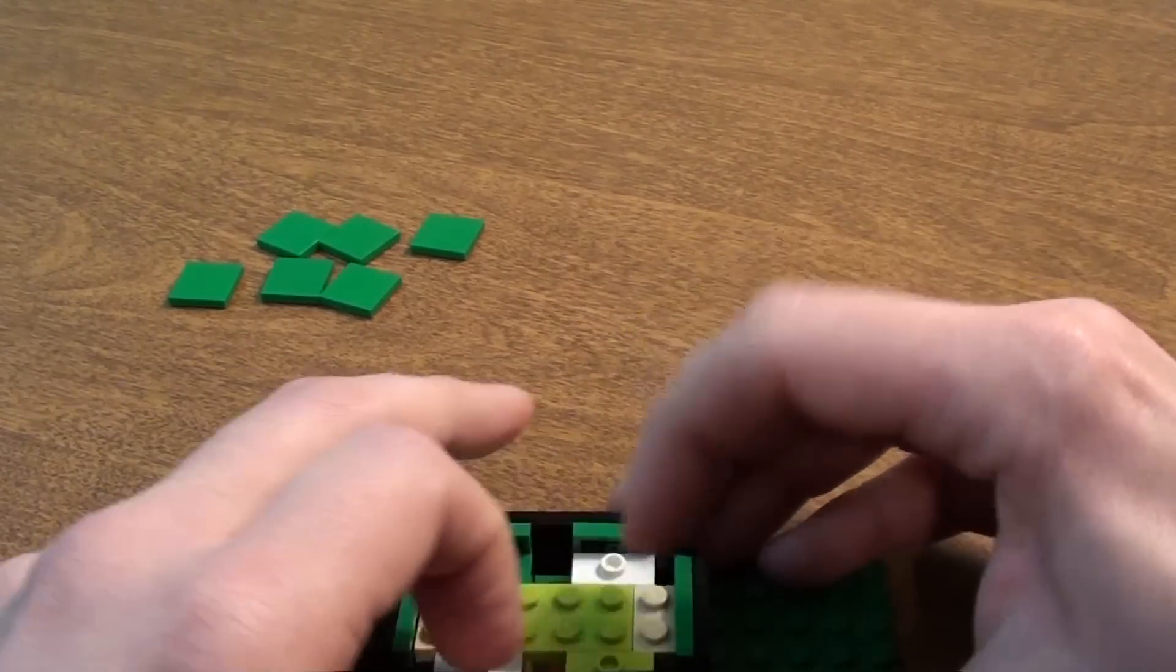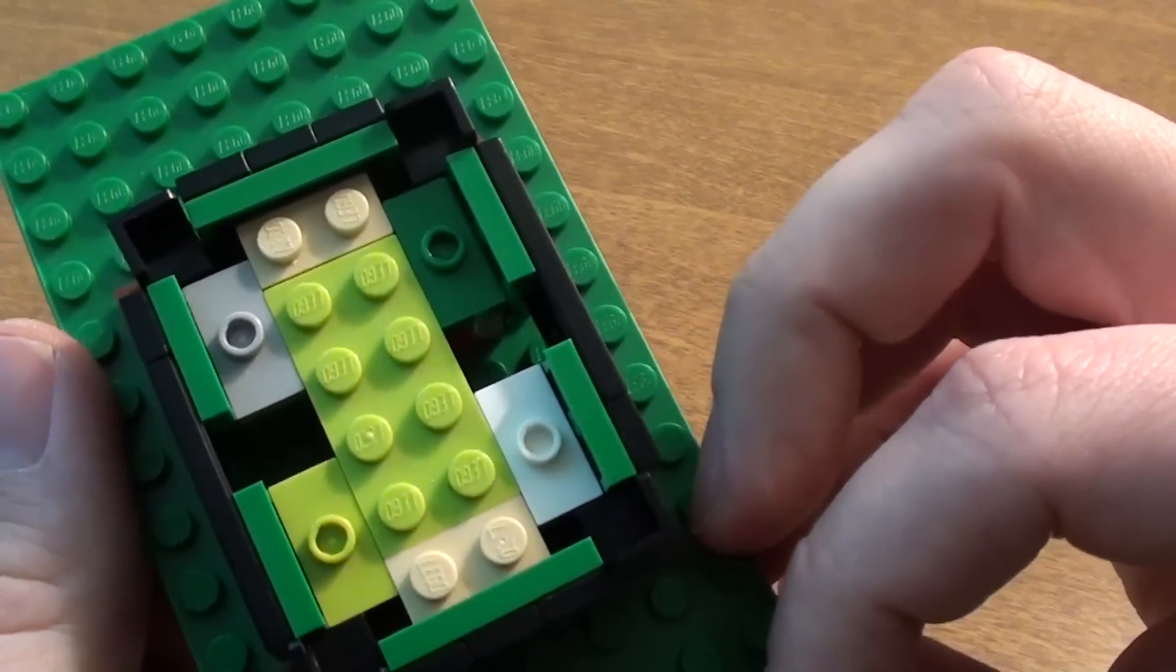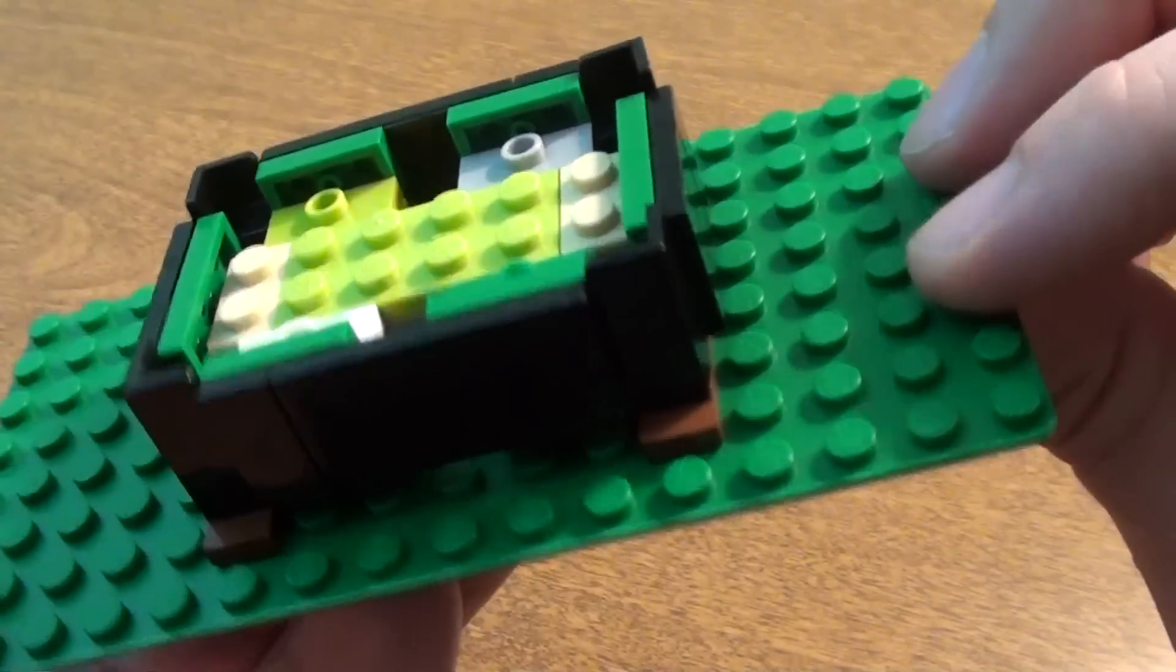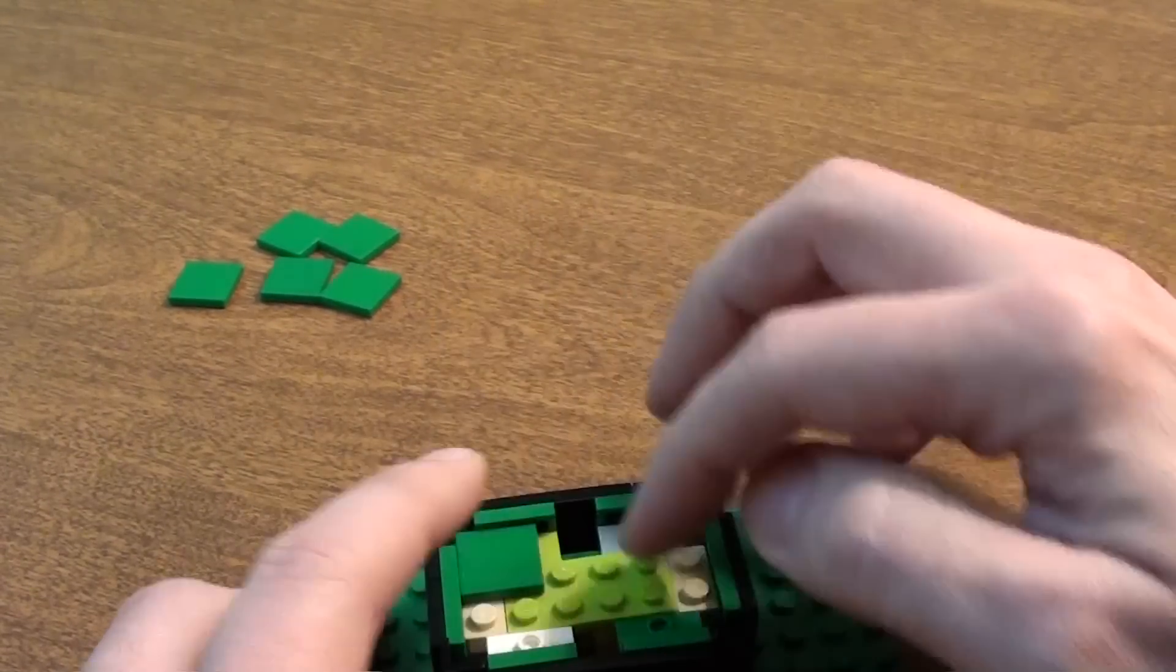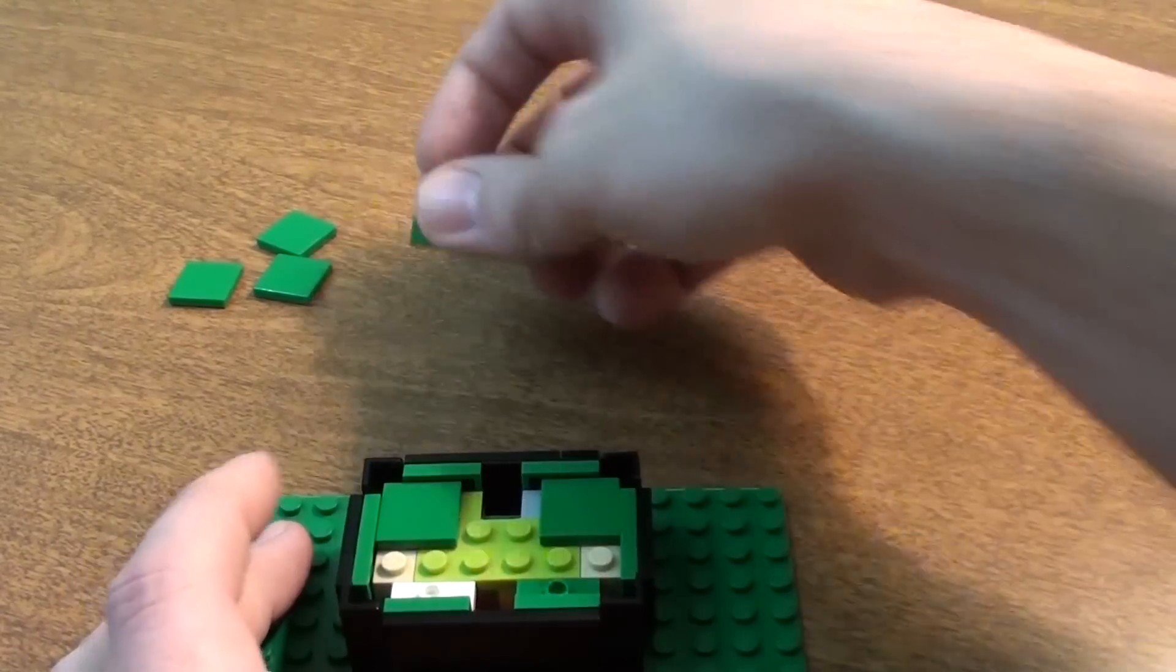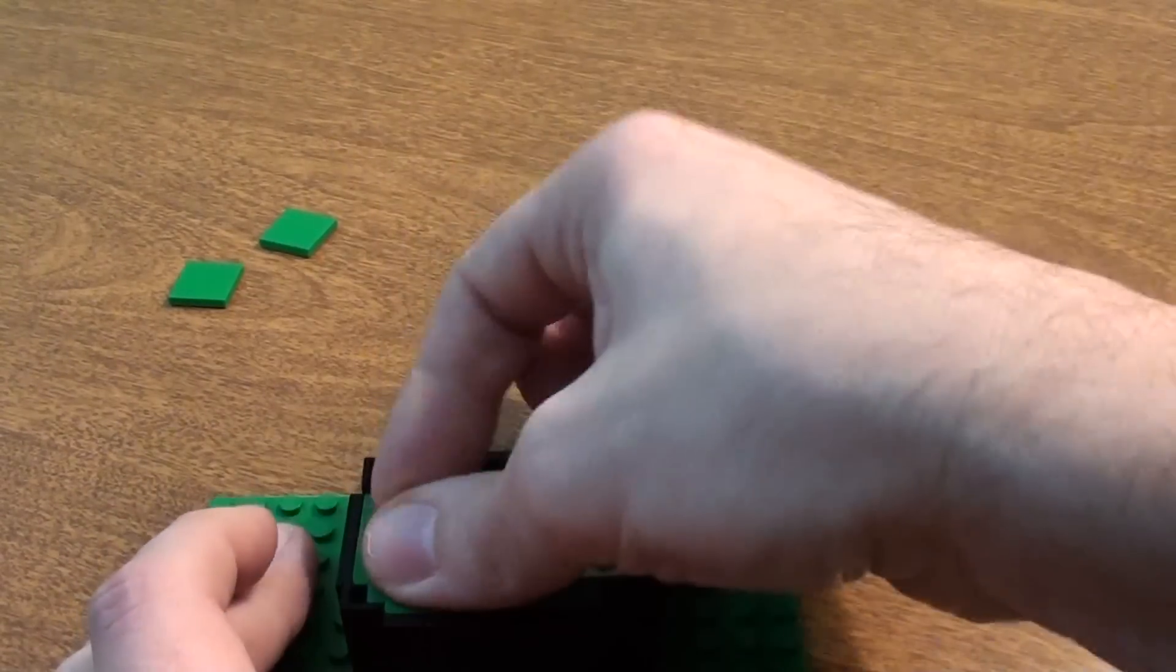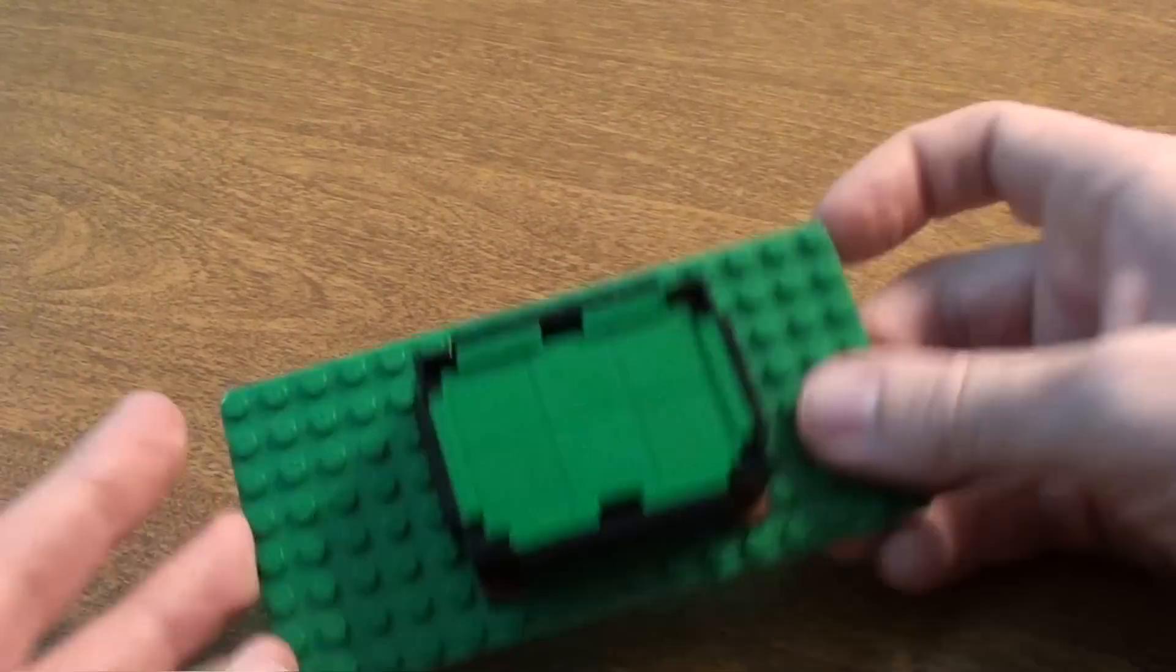Now all we have to do is add the green tiles to the top. This is why you put those jumpers in. And there you have it, a pool table.